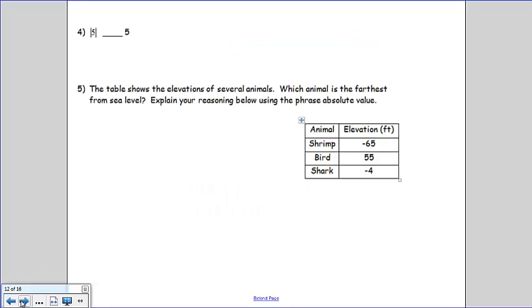The very last question, number 5, says the table shows the elevations of several animals. Which animal is the farthest from sea level? You should explain your reasoning using the phrase absolute value.